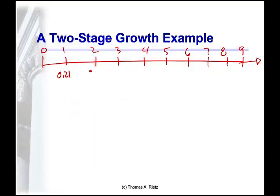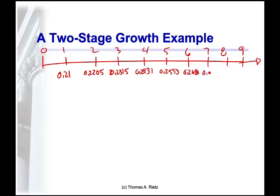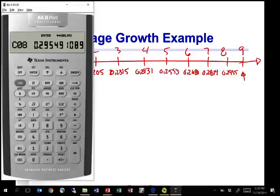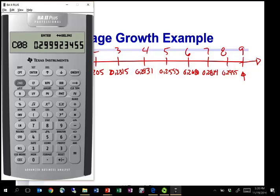Writing it all down on the timeline: period 2 is $0.2205, period 3 is $0.2315, period 4 is $0.2431, period 5 is $0.2553, period 6 is $0.2680, period 7 is $0.2814, and period 8 is $0.2955. In period 9, I switch to the new growth rate of 1.5%, giving a dividend of $0.2999.